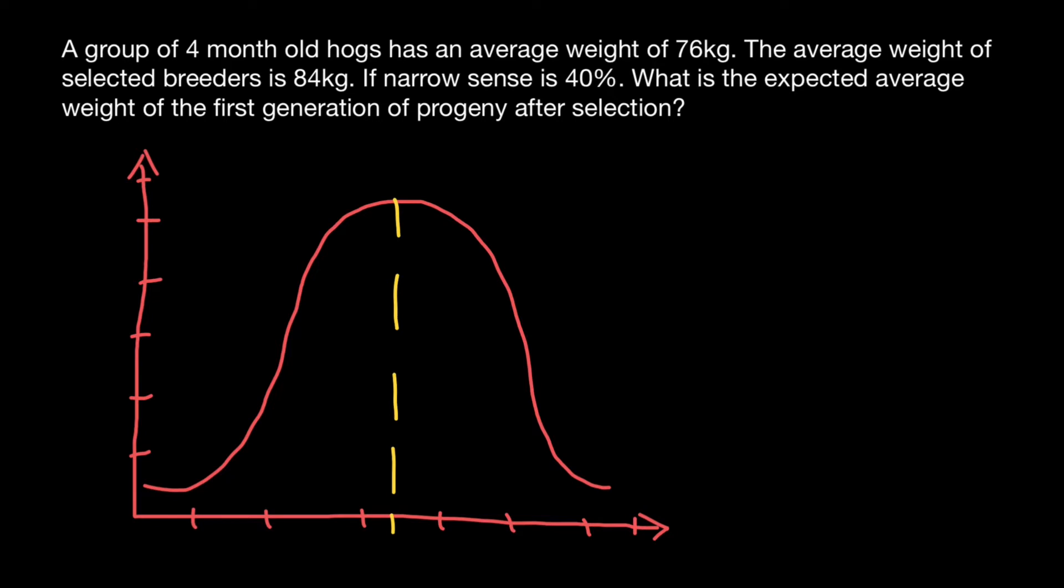According to our problem, we know that the mean of the population is 76 kilograms. We want our hogs to weigh more, so from this population we choose parents from this side of this population. You should understand that this half weighs more than 76 kilograms, and this half weighs less than 76 kilograms. And we got a new mean, which we call mean of the selected parents, and it is 84 kilograms according to our problem.